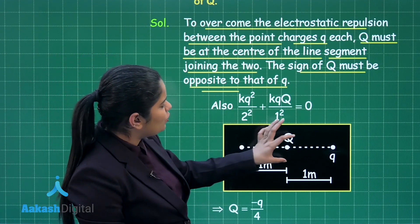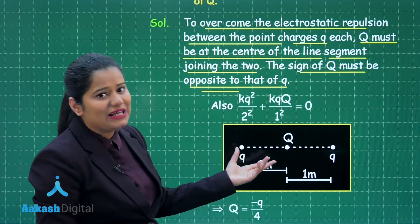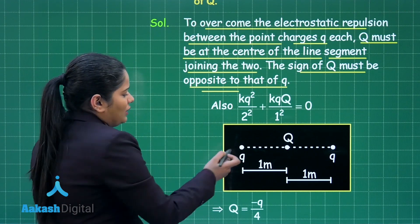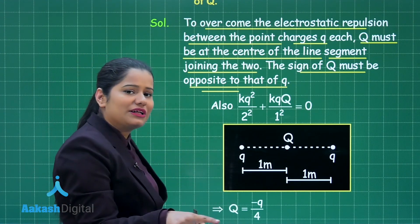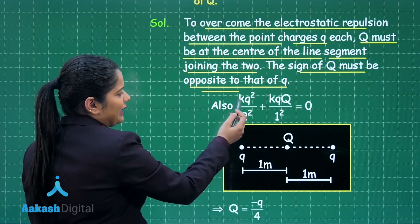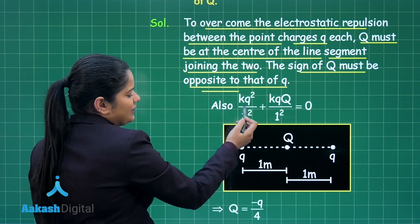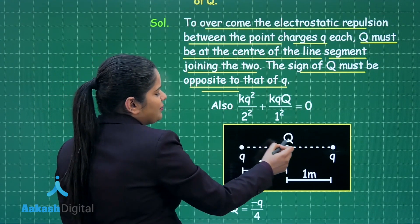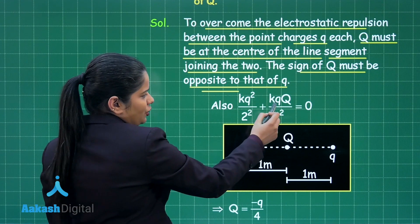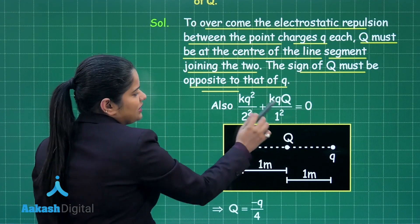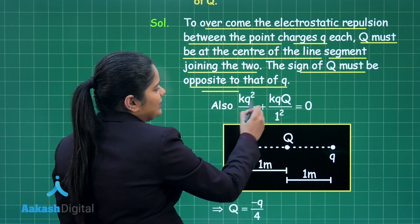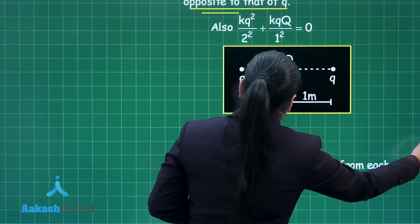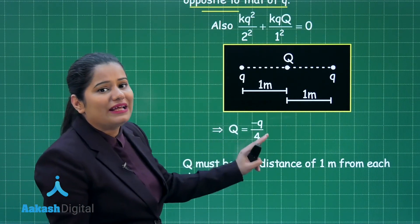To calculate the magnitude of the third charge capital Q, we apply the equilibrium condition to one of the small q charges. The two small q charges repel each other with force K·q²/(2)² = K·q²/4. The force on small q due to capital Q is K·q·Q/(1)² = K·q·Q, since capital Q is placed at the center, 1 meter away. Setting the sum of these forces to zero and solving gives the value of capital Q as −q/4. This confirms the third charge is of opposite nature to the given charges.